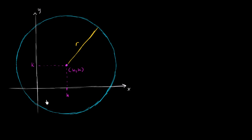Let's think about this a little bit. What constraints do we have to put on our x's and y's for them to be exactly r away from the center? Let's say that this right over here is one of the points — so this is x comma y — and this is one of the points that is exactly r away from the center.